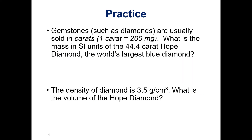Let's look at another example where we can see how we make different things into conversion factors. Gemstones such as diamonds are usually sold in carats, and 1 carat is equal to 200 milligrams. We want to know the mass in SI units of the 44.4 carat Hope Diamond, which is the world's largest blue diamond. Looking at the second part of this question, we're going to grams, so let's convert the mass into grams in this first part.